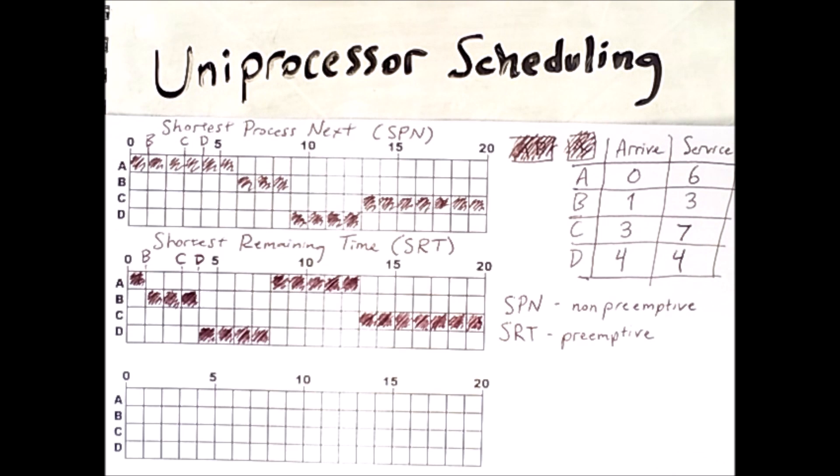Both of these algorithms require the scheduler to know or at least have an estimate of what the service time of the process will be, because these values are directly used in determining which process gets to run next.